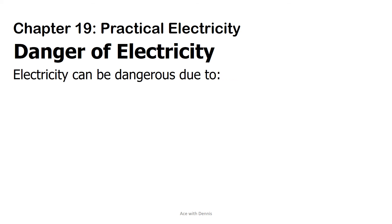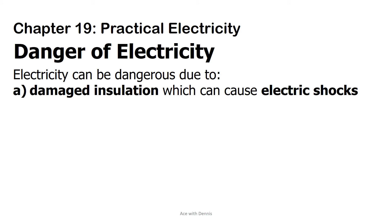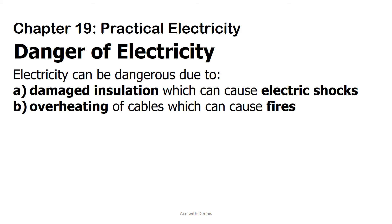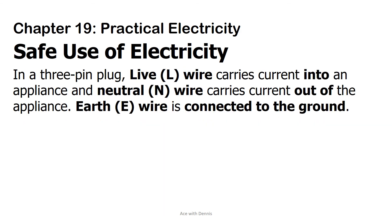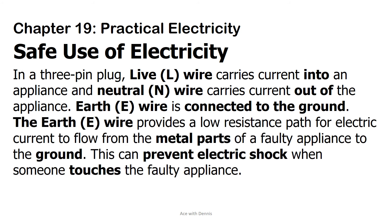Electricity can be dangerous due to: damaged insulation, which can cause electric shocks; overheating of cables, which can cause fires; and damp conditions, which can cause electric shocks. In a three-pin plug, the live wire carries current into an appliance and the neutral wire carries current out of the appliance. The earth wire is connected to the ground and provides a low resistance path for electric current to flow from the metal parts of a faulty appliance to the ground, preventing electric shock when someone touches the faulty appliance.